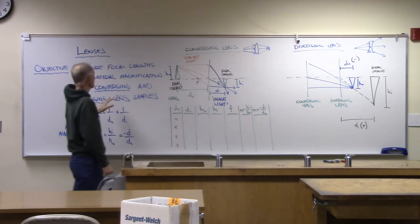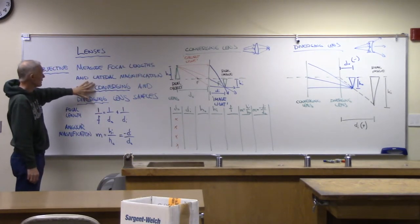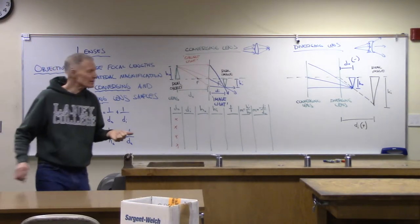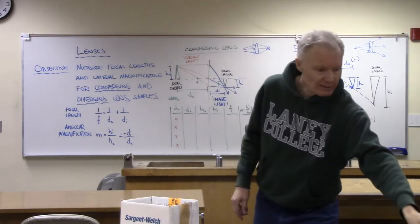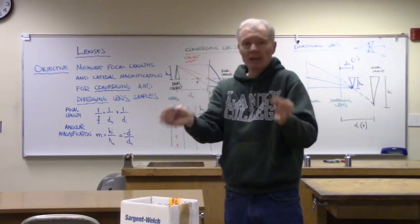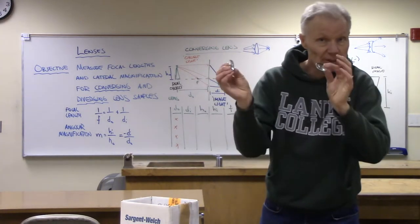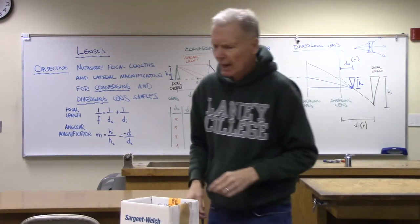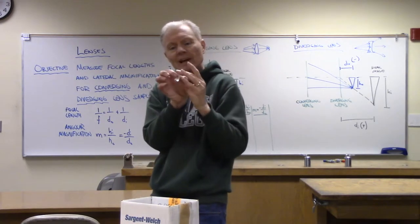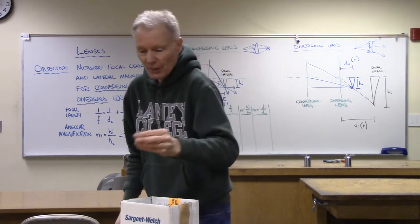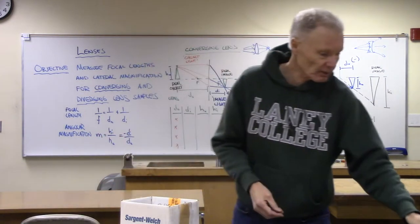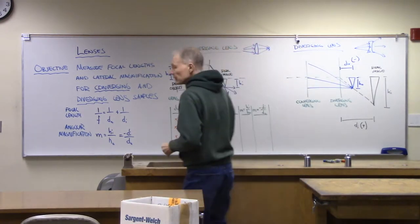We have two samples of converging lenses with different focal lengths and one sample of a diverging lens. Here are a couple of converging ones — you can see they have different focal lengths. And here is the diverging lens — you can see it's thinner in the middle. That's what the samples look like.